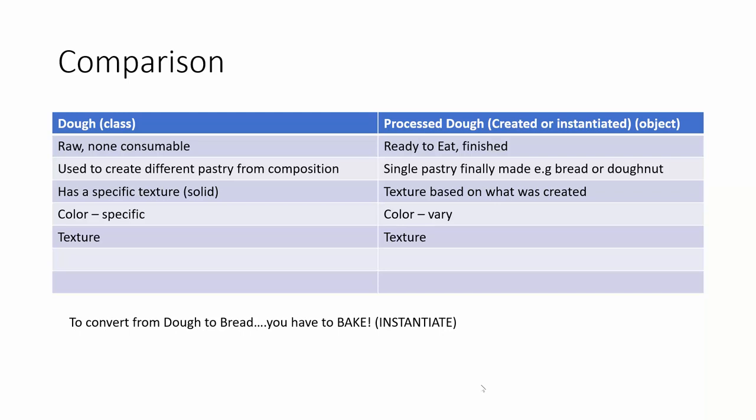Now let's look at a comparison between the dough — which is the raw form, the template, or the class — and then the processed dough, which has been instantiated into a real object. When you have a class, you have to instantiate that class to become a real object. Dough is raw and not consumable — you cannot have dough displayed as a product ready to be served on a restaurant menu. Processed dough, which is the product, is ready to eat. You can order a doughnut with sprinkles and honey and consume that.